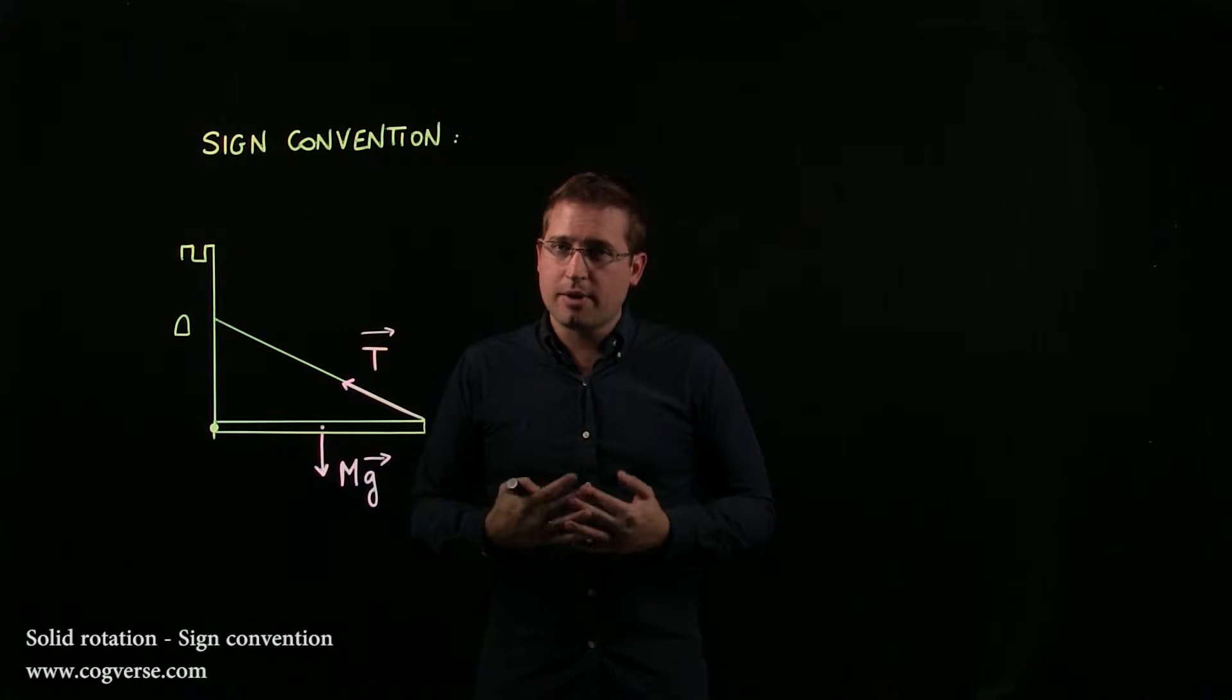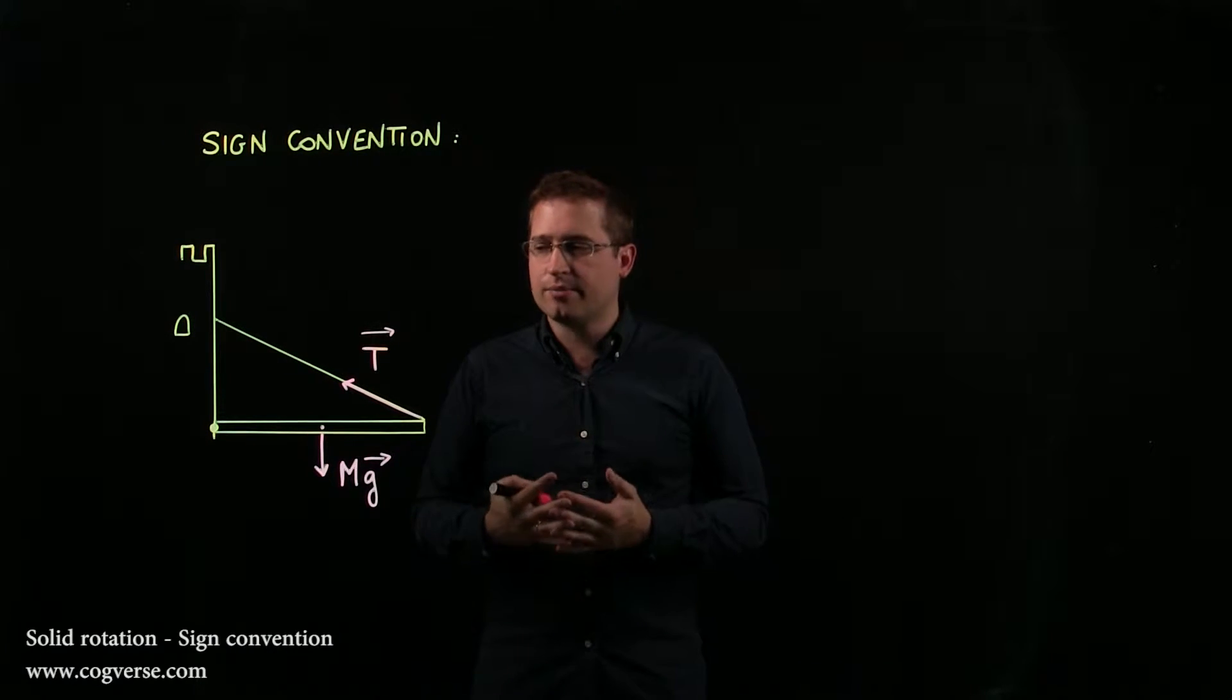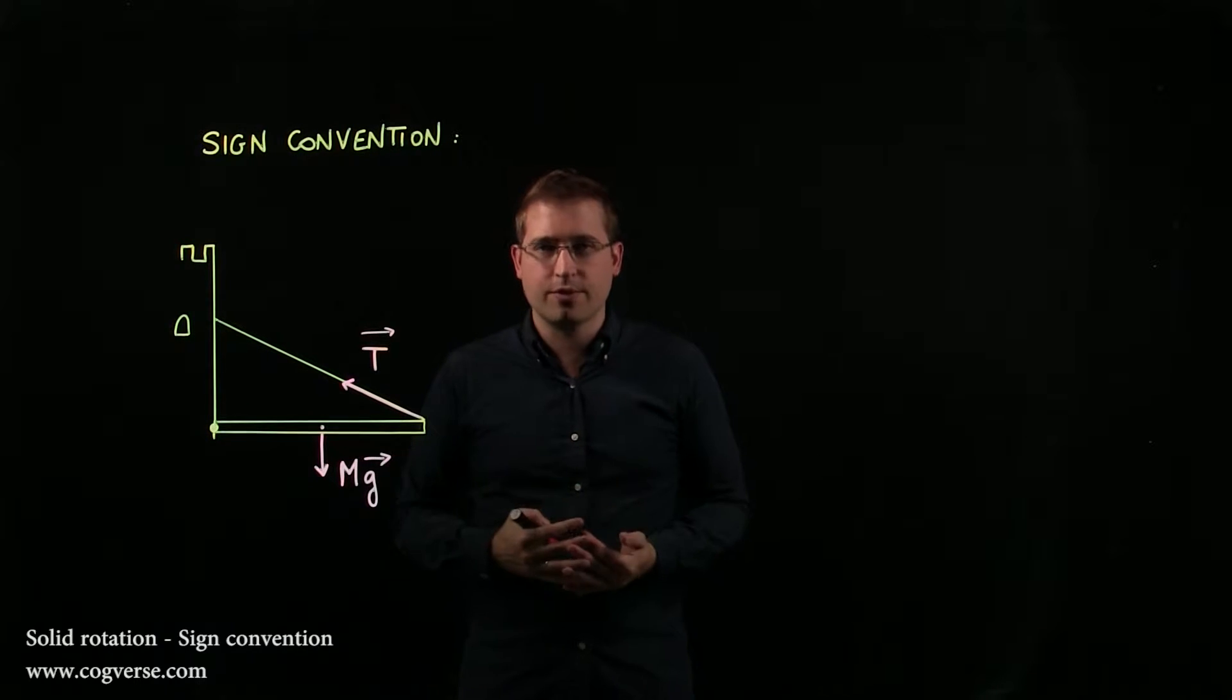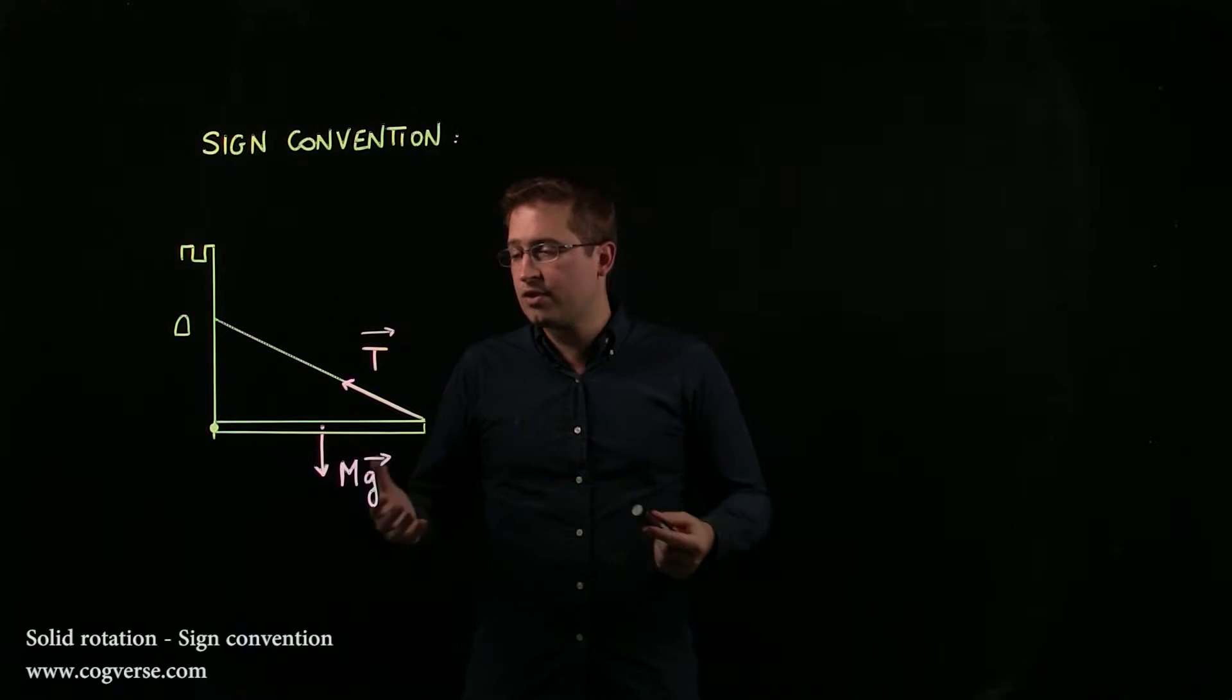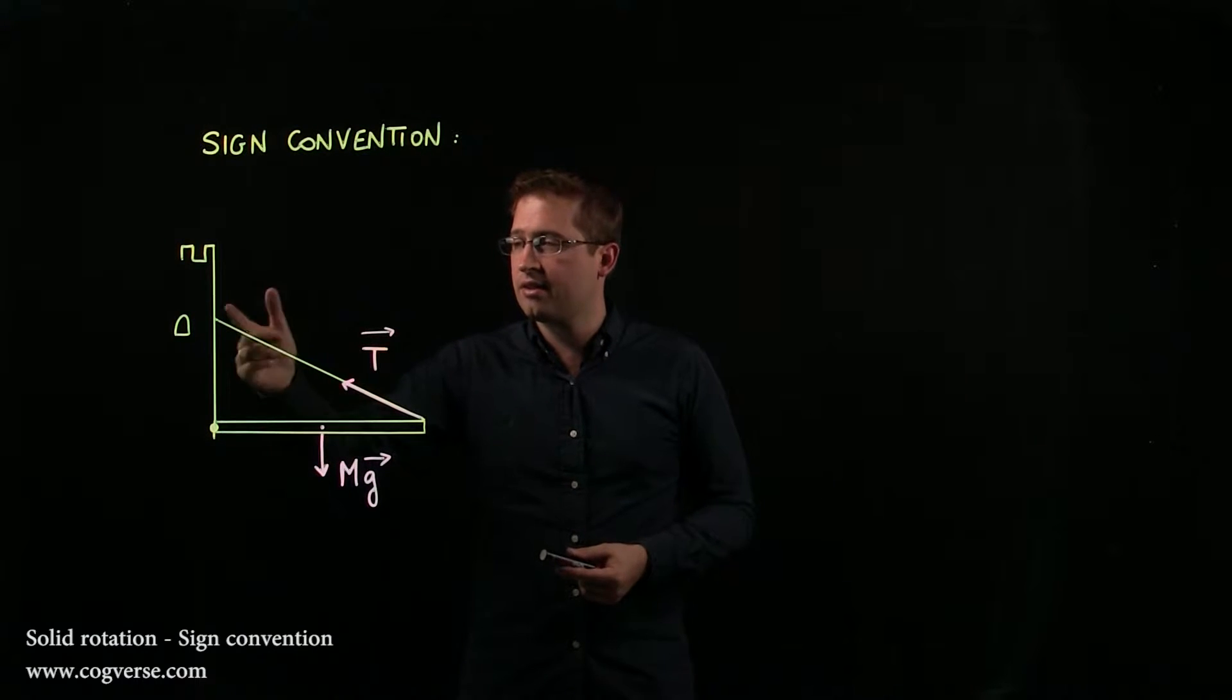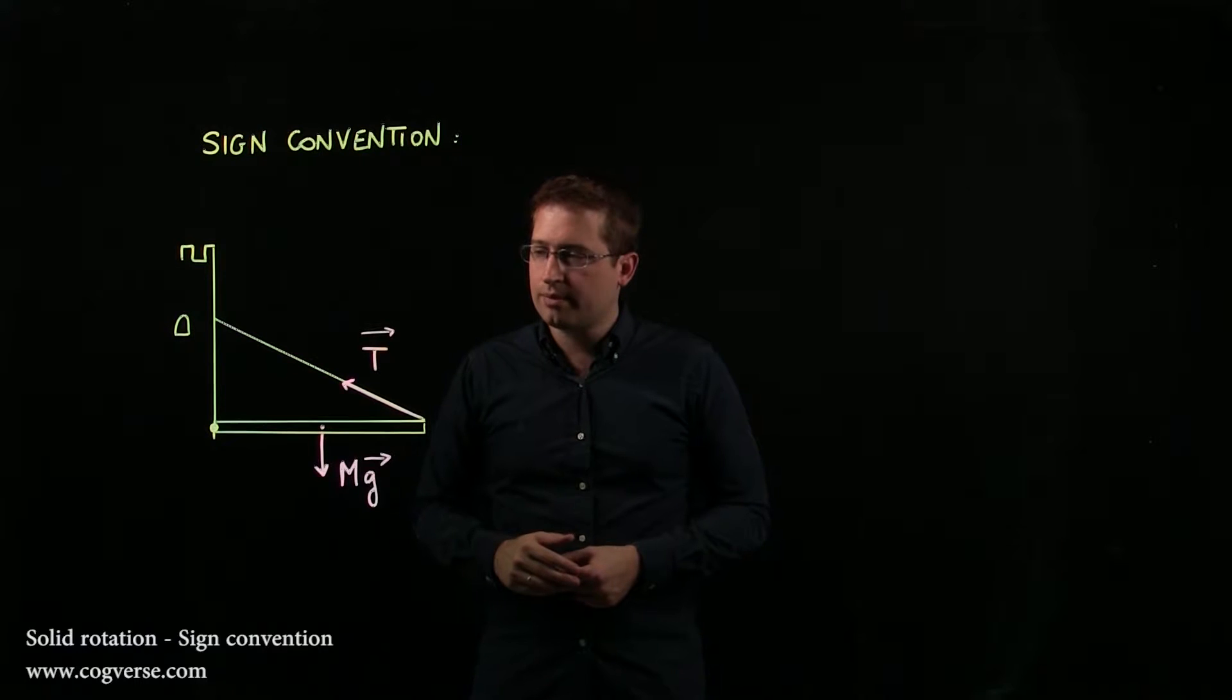So let's talk about the sign convention and to talk about it let's consider this drawbridge. Now the drawbridge is made of two things: the bridge and the cable or the chain that can pull it up to close it.